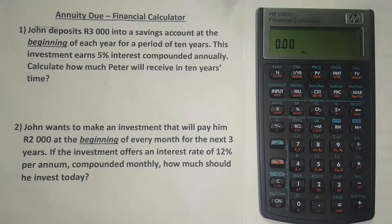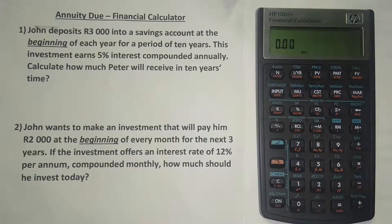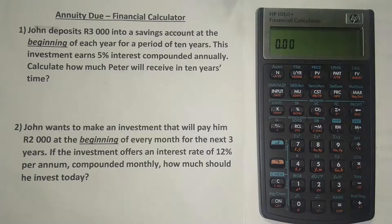After finishing your calculation, always make sure you remove the calculator from Begin mode. If you leave it there by mistake, calculations for ordinary annuities and others will give you wrong answers — students often make that mistake. To remove it, press the orange button and then press MAR again. Now it's back to ordinary annuity by default. I hope this lesson has made sense. Please subscribe to our channel, like this video, and share it with those who might find it helpful. Cheers.